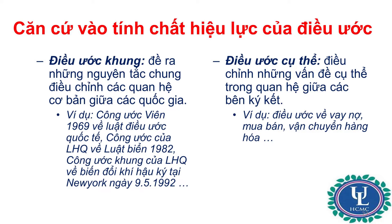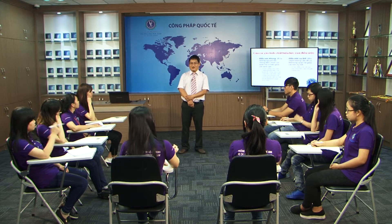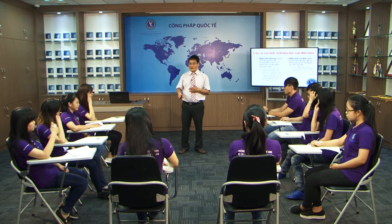Loại thứ hai là những điều ước quốc tế cụ thể, có nội dung giải quyết những vấn đề cụ thể trực tiếp trong quan hệ giữa các quốc gia ký kết. Ví dụ: các điều ước về vay vốn tín dụng, mua bán hàng hóa giữa các quốc gia, vận chuyển hàng hóa, thương mại quốc tế, tín dụng hoặc tài chính quốc tế.